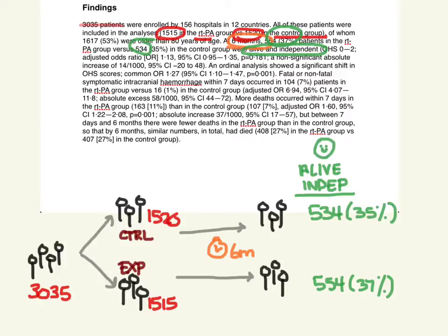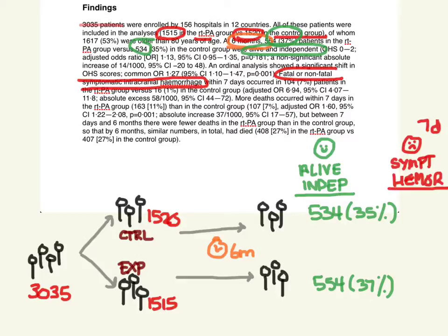We're also looking at the unhappy outcome: having a fatal or non-fatal symptomatic intracranial hemorrhage — that is, bleeding in your brain — within seven days. That occurred in 104 patients in the treatment group and 16 patients in the control group. Using a diagram really helps me understand what's going on and put things in the right perspective, because all this text can be confusing.